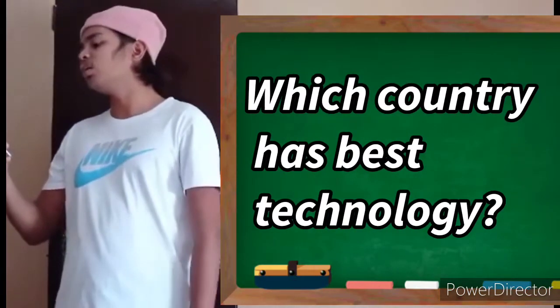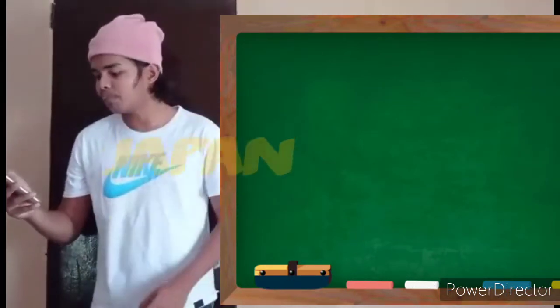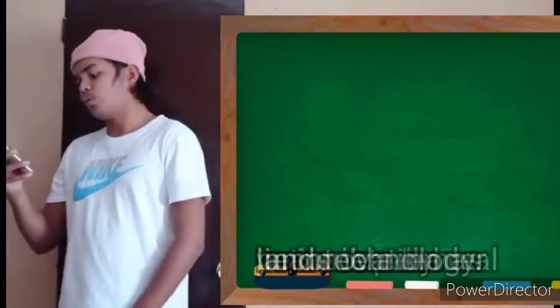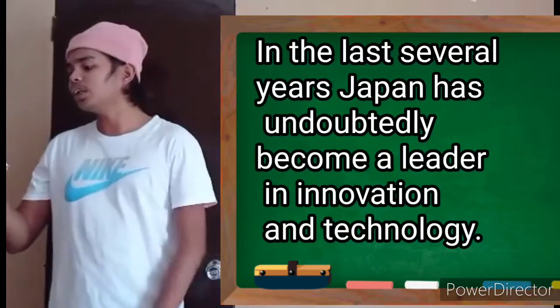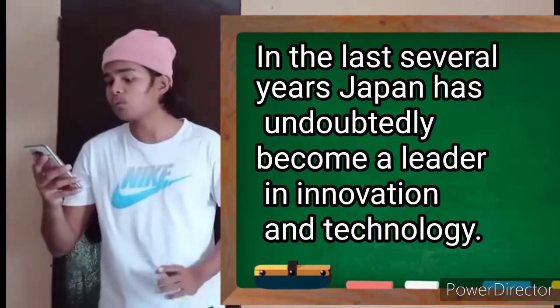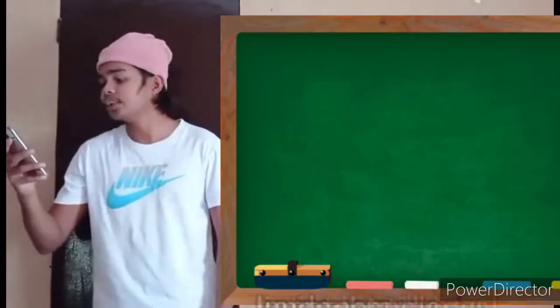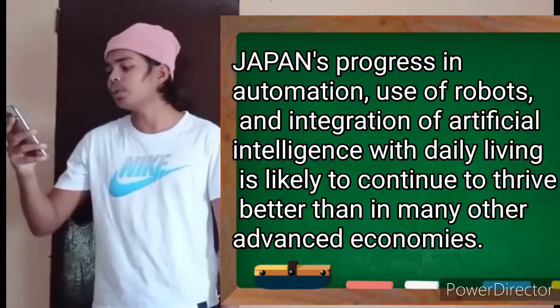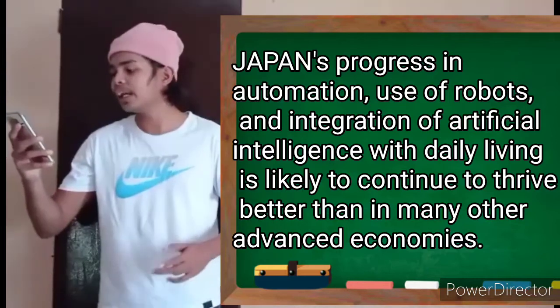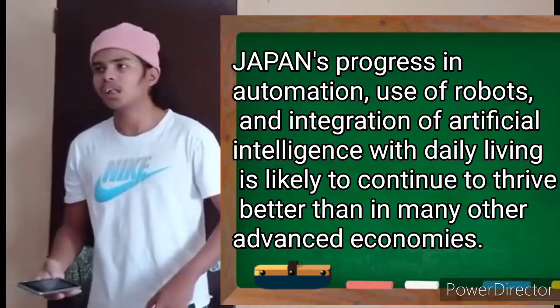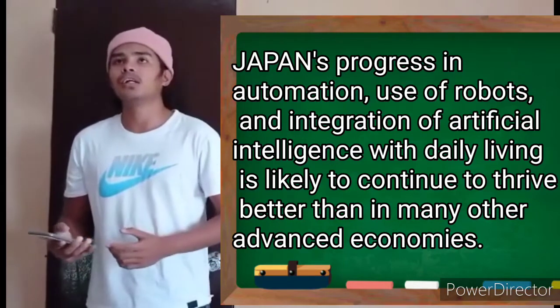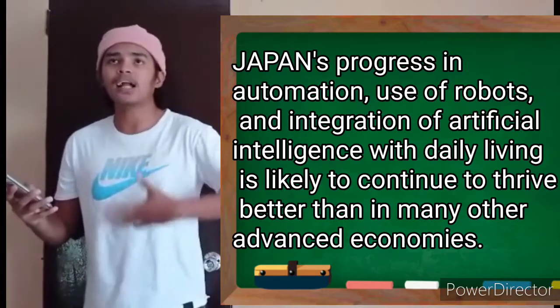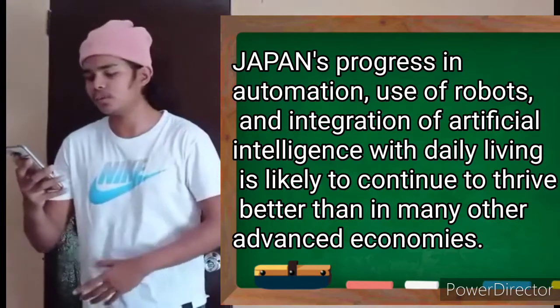Which country has best technology? Japan is top 1 in terms of technological expertise, rank 1. Is Japan leading in technology? In the last several years, Japan has undoubtedly become a leader in innovation and technology. Japan's progress in automation, use of robots, and integration of artificial intelligence with daily living is likely to continue to try better than in many other advanced economies. So Japan is the most advanced country in all of Asia. So they continue to work to make their technology even more advanced.